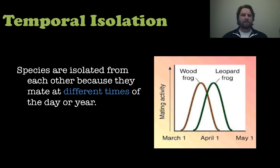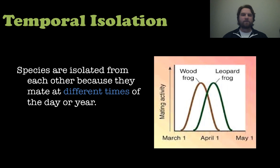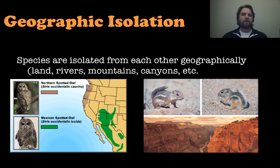Next is temporal isolation — when species do not mate with one another because they usually mate at different times of the year or different times of day. As shown in this graph, a wood frog versus a leopard frog have a peak in their mating activity at different times of the year, so they're never really going to mate with one another because they are temporally isolated.